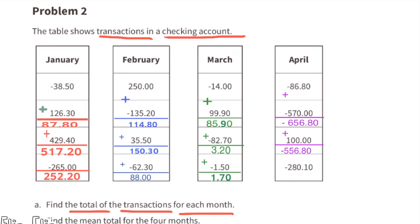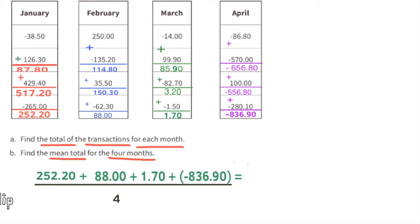with a withdrawal of $86.80, followed by another withdrawal of $570, leaving a temporary balance of negative $656.80, and then